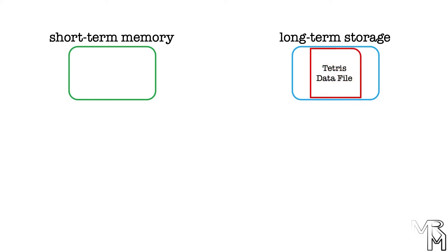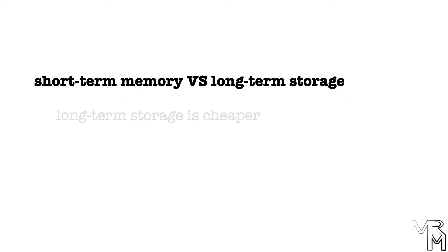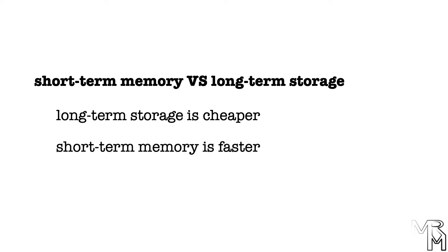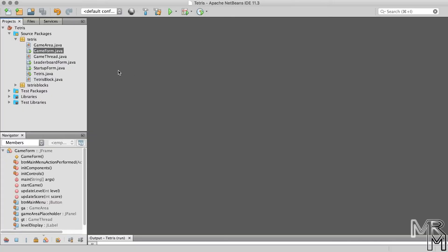Some of you might ask: why does it have to be so complex? Why does the computer not store all its data in long-term storage? Well, short-term memory is more expensive, so it's more cost-efficient to have a combination of a relatively small amount of short-term memory and a much greater amount of long-term storage. And if long-term storage is cheaper, why not just get rid of short-term memory? Because short-term memory is faster — it's more expensive because it's faster.